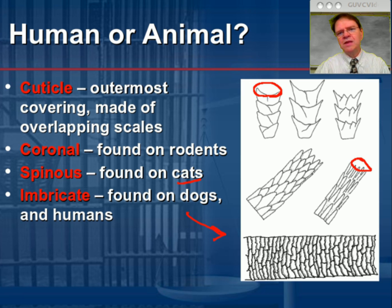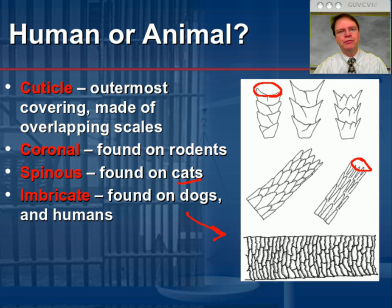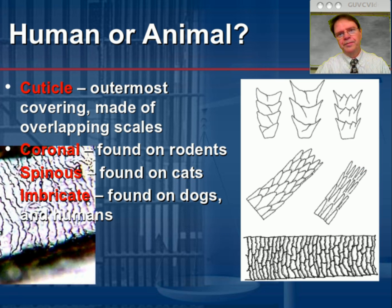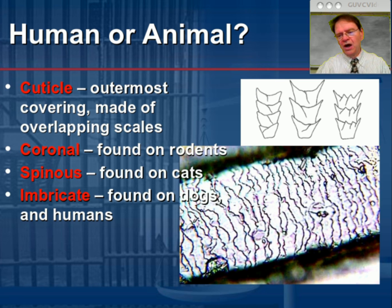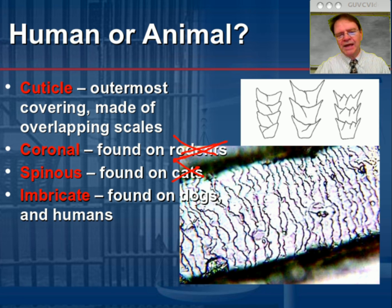How do we visualize cuticle patterns? You can't see them easily with a light microscope. So, take a glass microscope slide, lay down a very thin layer of clear nail polish, allow it to set for a second, lay a hair into the nail polish, let it dry for about 30 seconds to a minute, and then remove the hair shaft. Basically, you get a cast of the cuticle and can identify the structure easily. Of the three patterns, if scales are neither coronal nor spinous, we've eliminated rodents and cats — so we're looking at either a dog or a human, and we investigate further from there.